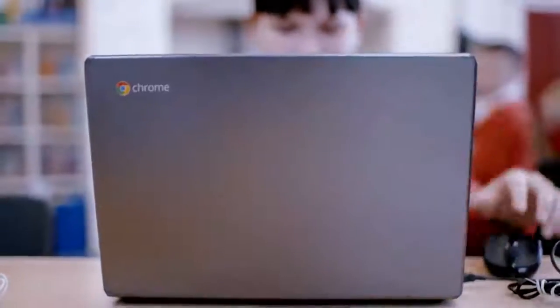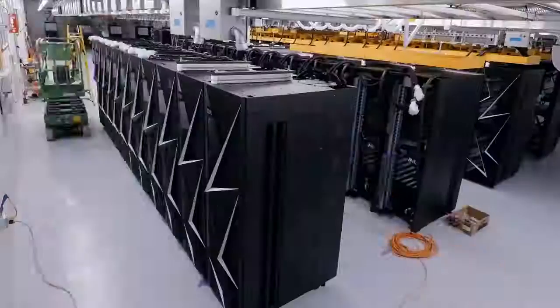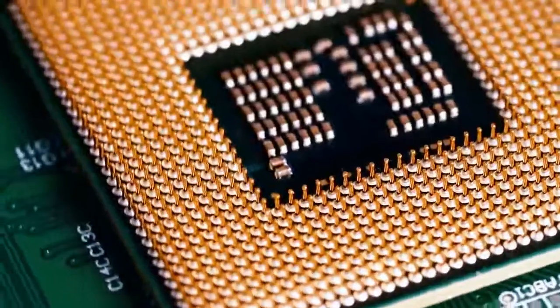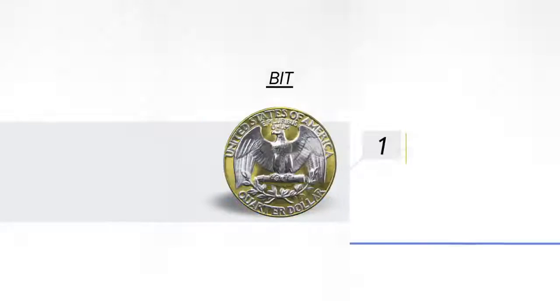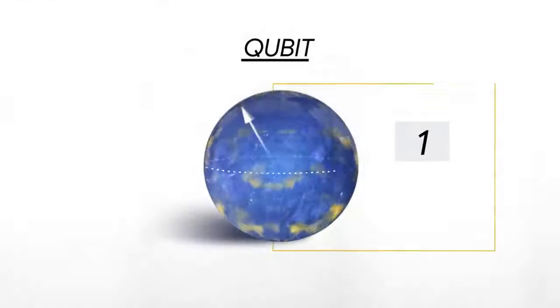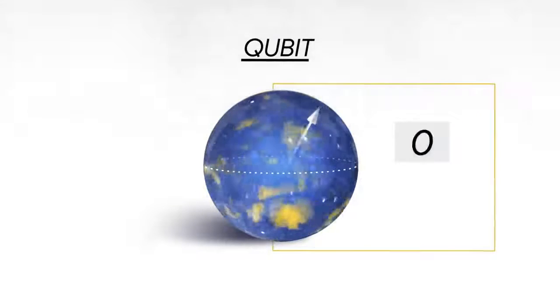The word 'quantum computer' is a little bit misleading because it sounds like a computer, and when people think of a computer they think of a phone or a laptop. The truth is the phone, the laptop, and even a very powerful supercomputer all operate according to the same fundamental rules — a quantum computer is fundamentally different. The classical bit stores information as a zero or one, and a quantum bit can be both zero and one at the same time.